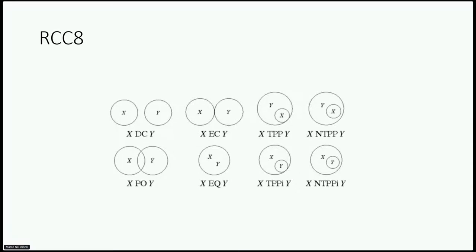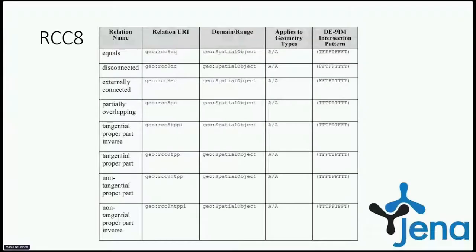The last family is the region connection calculus. It consists of eight basic relations that are possible between two regions: disconnect, externally connected, equal, partially overlapping, tangential proper part, tangential proper part inverse, non-tangential proper part, and non-tangential proper part inverse. The RCC8 is shown here in the form of a table with its associated intersection matrix pattern.